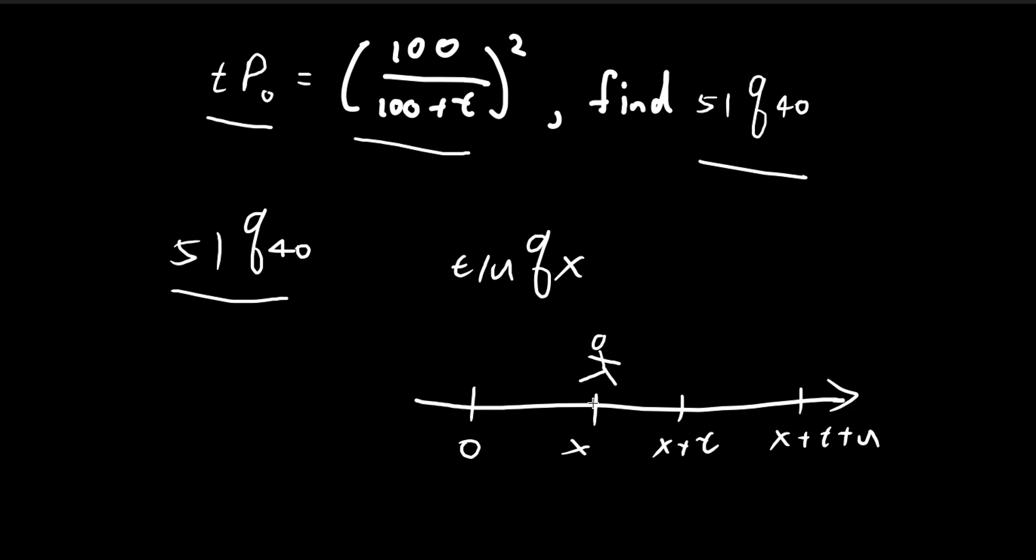that, provided that you're at age x right now, this is the probability that you will die within this period, between t and t plus u years in the future.